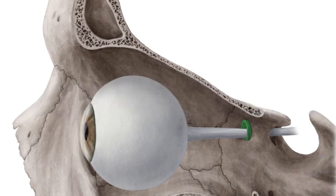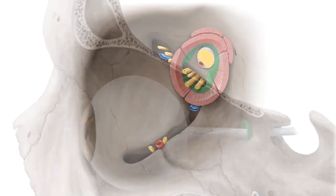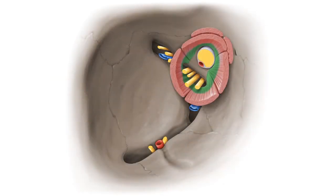And to help you memorize this term, here are some additional images. We selected them for you from our Atlas of Human Anatomy, showing the structure highlighted in green.